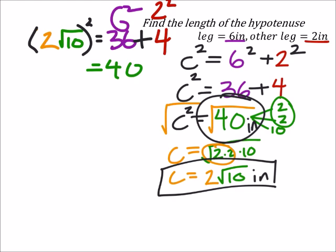So, right here, if I were to distribute this 2, I would have 2 squared times the square root of 10 squared, which is just 10. And 2 squared is 4, so 4 times 10 should equal 40.